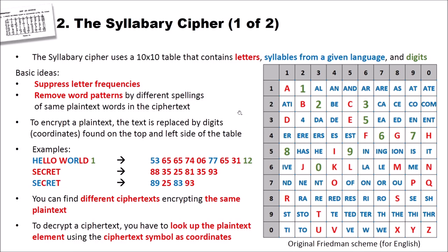To encrypt the plaintext, the text is replaced by digits, coordinates found on the top and left side of the table. So let's have a look at this table. We have digits on the left side going from one to zero, and you have digits on the top of the table also going from one to zero. Then inside this table we have 100 cells, and as I said, they are filled with letters, syllables from a given language, and digits.